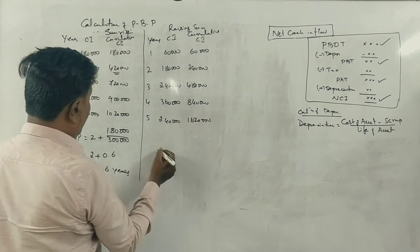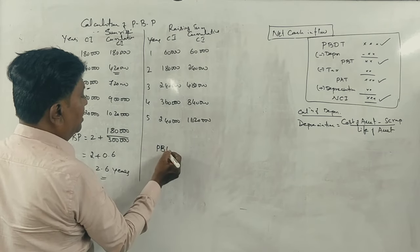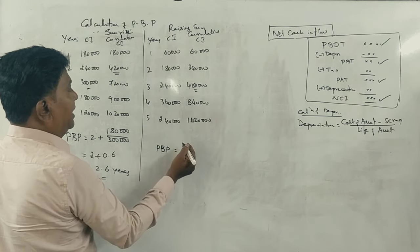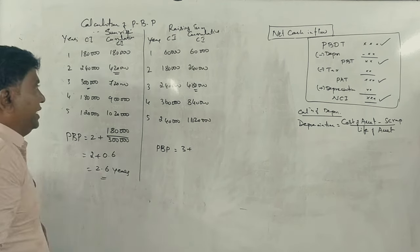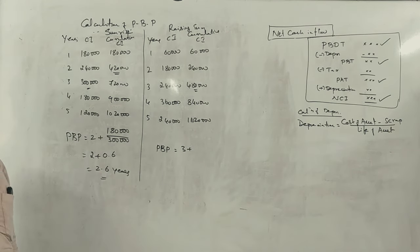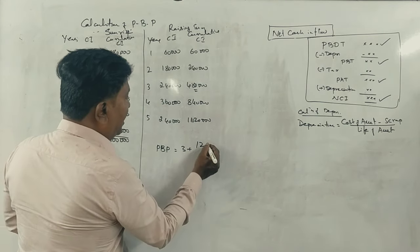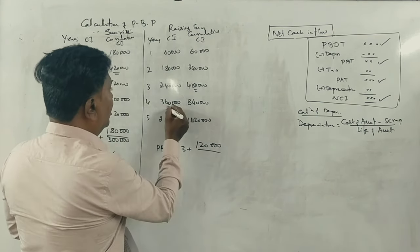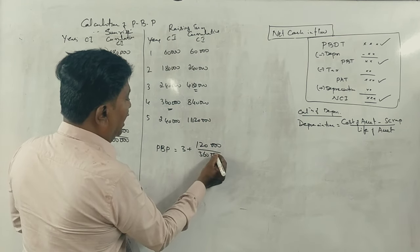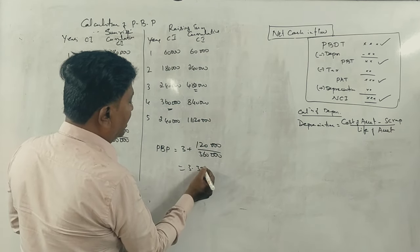Payback period: 6 lakhs minus 4,80 equals 1,20. 1,20 divided by 3,60 equals 3.33 years.